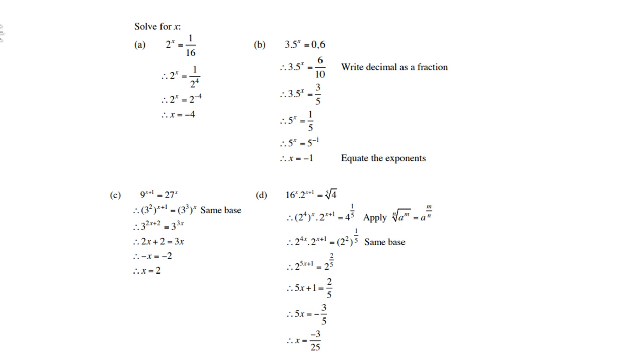Look at d, 16x times 2 to the power x plus 1 equals to the 5th root of 4. Then 16 is 2 to the power 4. The 5th root of 4 is 4 to the power 1 fifth. 2 to the power 4x times 2 to the power x plus 1. Multiply those two terms, and you add the exponents. You get 2 to the power 5x plus 1, and 2 times 1 fifth is 2 fifths. Therefore, 5x plus 1 equals to 2 fifths. Then take the 1 over. Divide by 5. x equals to negative 3 fifths.